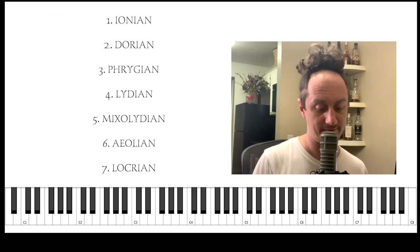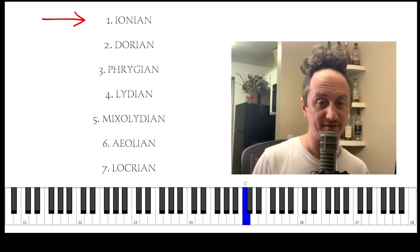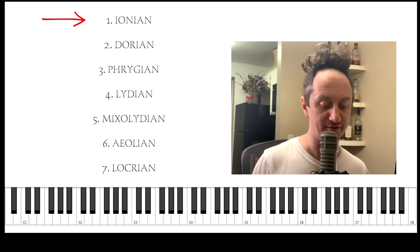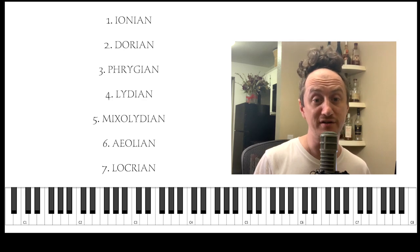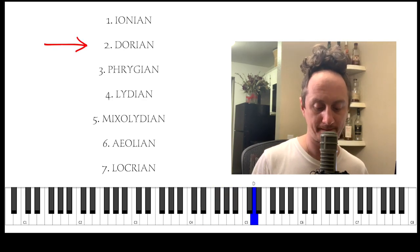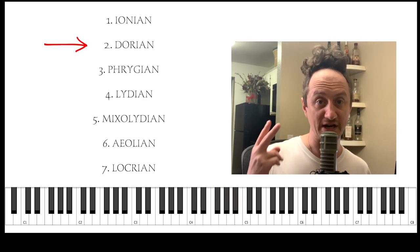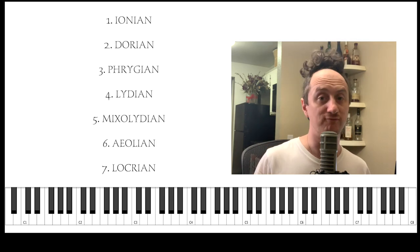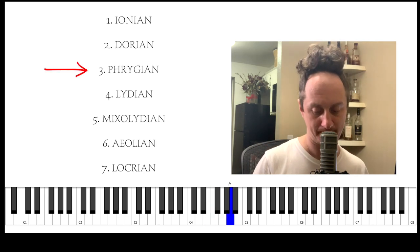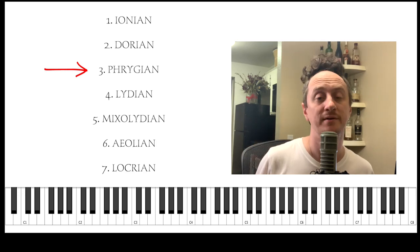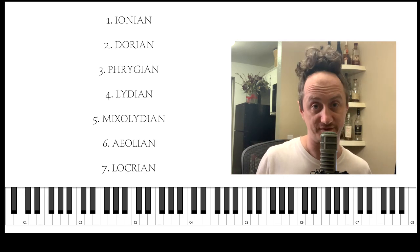Let's play from C to C. That's the first mode or chord scale, Ionian. If we play from D to D, we get the second chord scale, Dorian. If we play from E to E, we get the third chord scale, Phrygian, and so on and so forth with the rest of them.